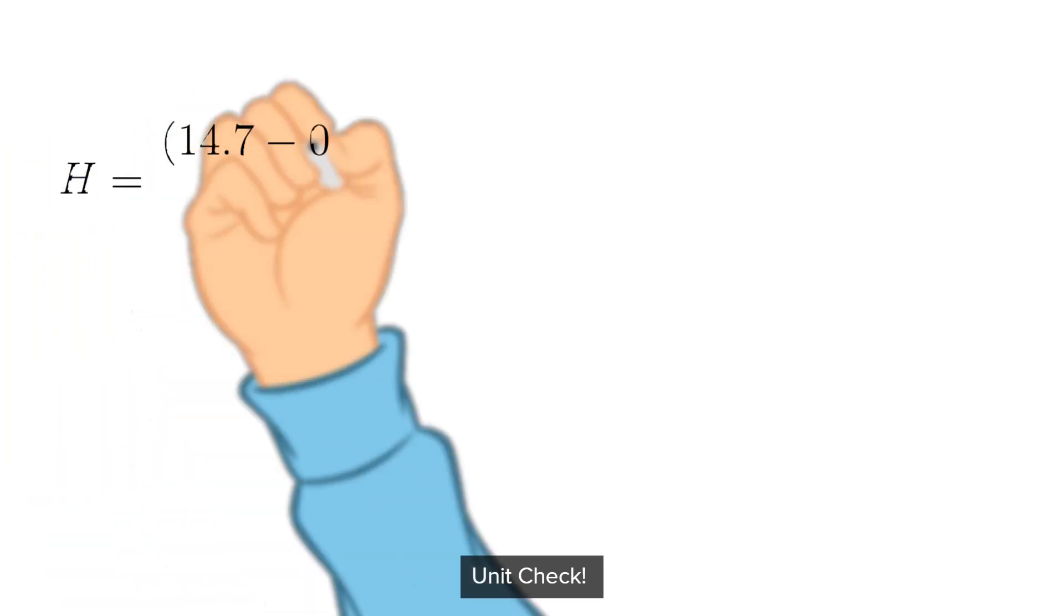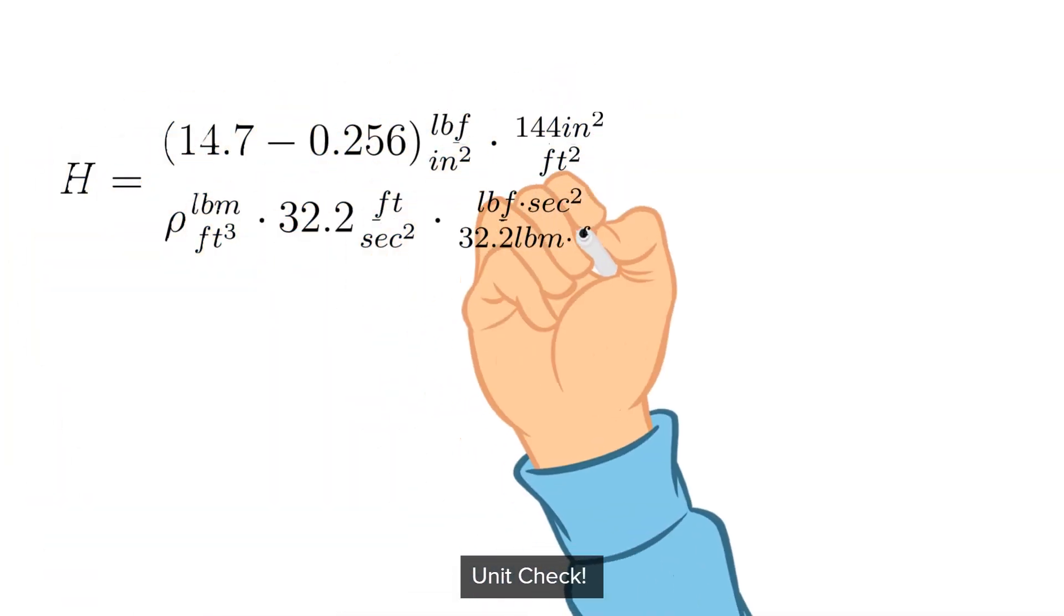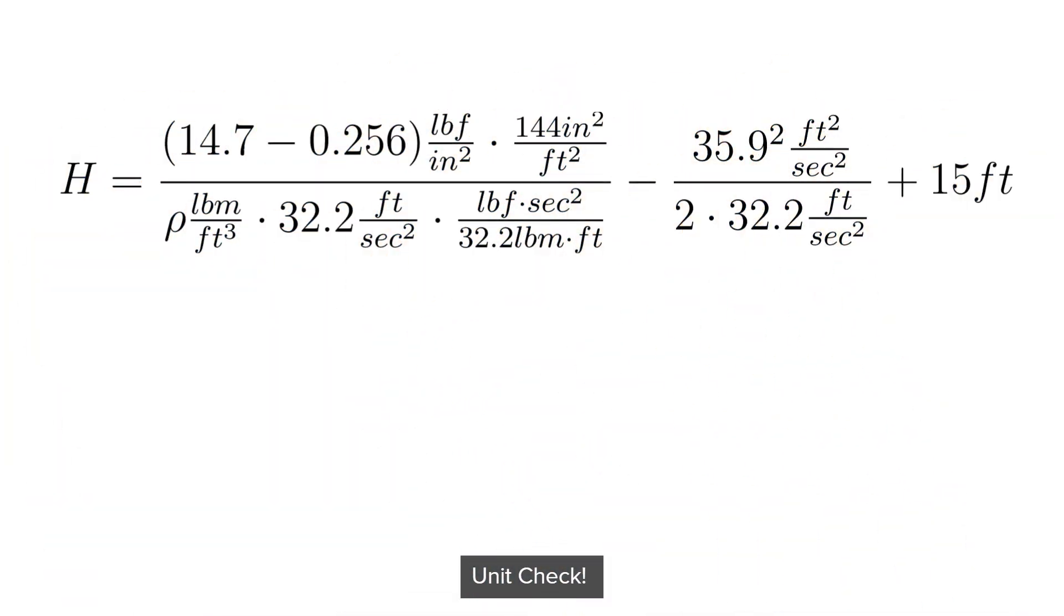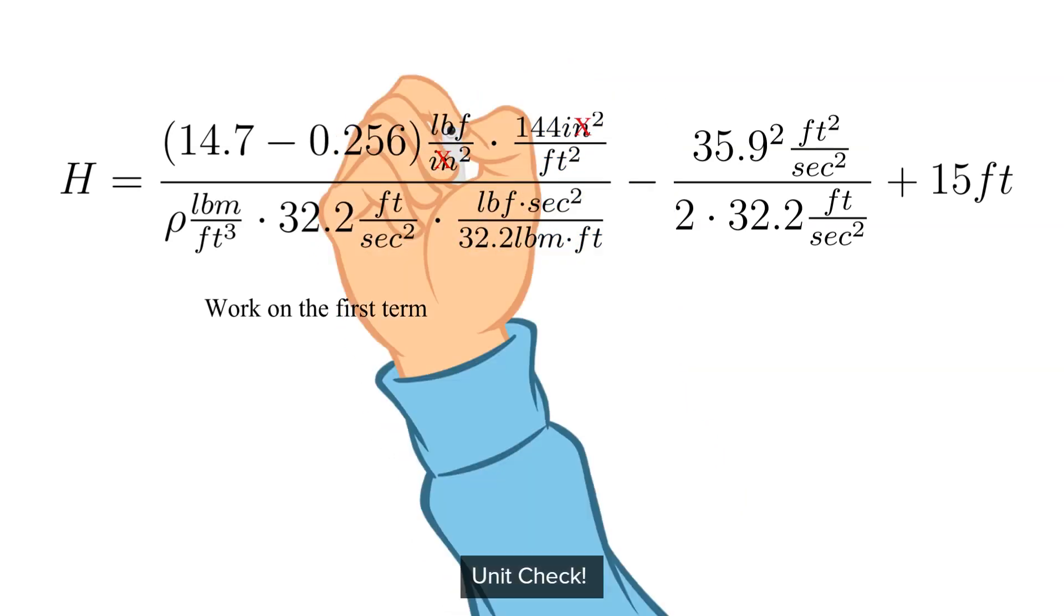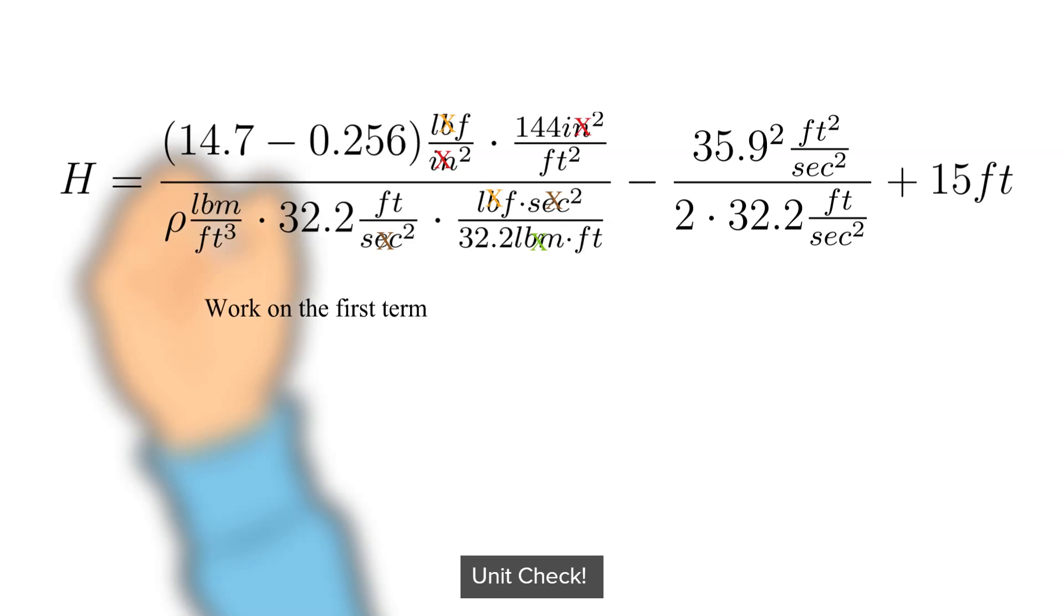That was pretty quick. Let's make sure the units work out correctly. Each of the three terms should result in units of feet. The units for the third term, L1, is already in feet so we don't have to worry about that. Stepping through and cancelling the units is shown below.